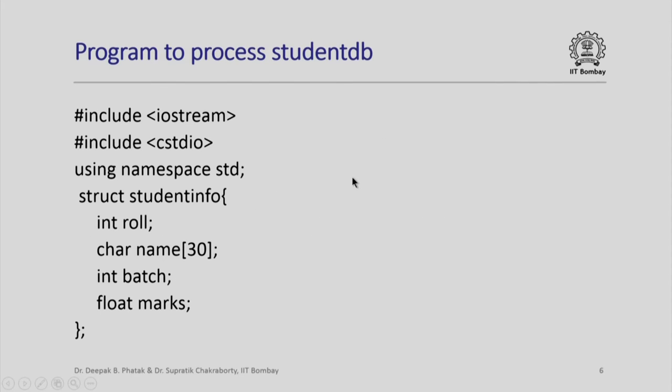Equipped with this we can now write a program to process student DB. This is merely a program for illustration. I have used this opportunity to illustrate two features. One, how can I search for a particular student whose roll number is given sequentially. Please note that although the file is a binary file and permits direct access, I can always process the records one after another sequentially. We will also see how we can directly access a desired record.